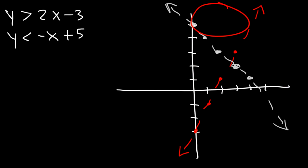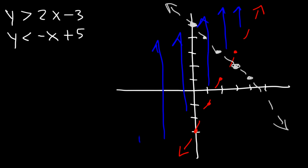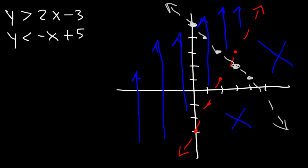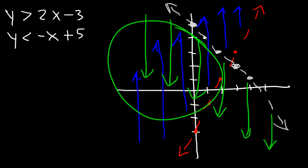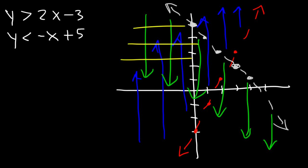Let's focus on the first equation — the one with the red line. y is greater than the function, which means we need to shade above that line. The blue line exists in two regions, so the answer won't be in the other two. For the second equation, y is less than the function — less than negative x plus 5, so it's below the gray line. The only region where both equations are true is the overlapping region, and that's the region that gets shaded.